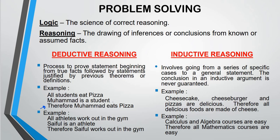From the statement. From the two statement here. We conclude one conclusion. Another example. All athletes work out in the gym. Saiful is an athlete. This is the conclusion that we make. Therefore. Saiful works out in the gym. The conclusion is deduct from the two statement here.